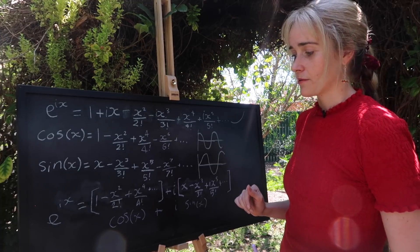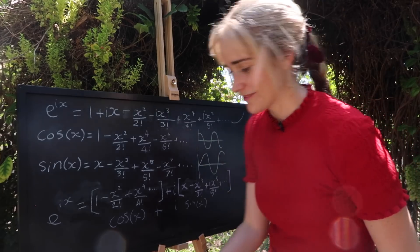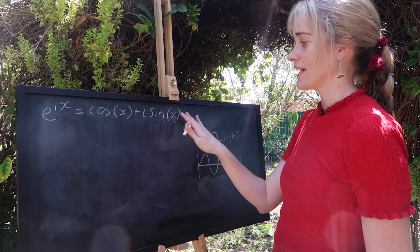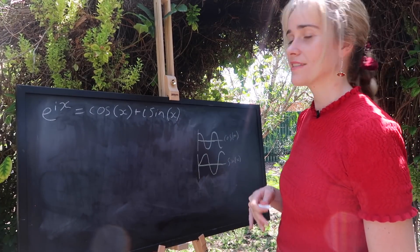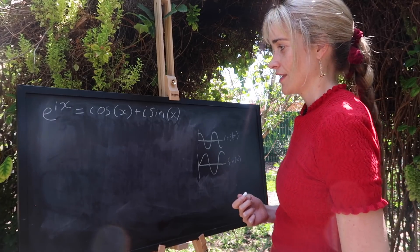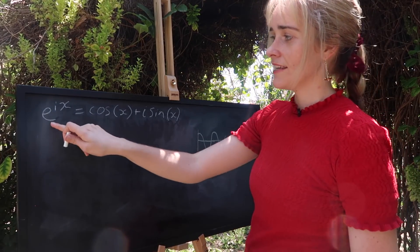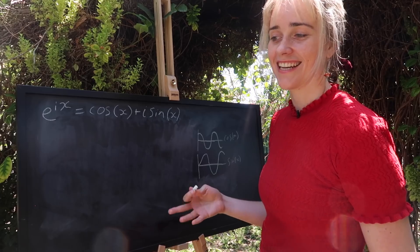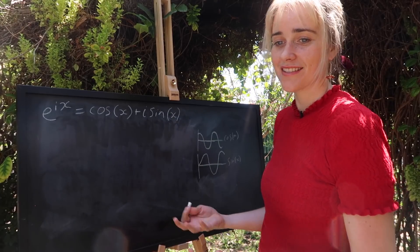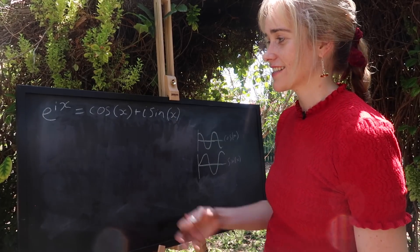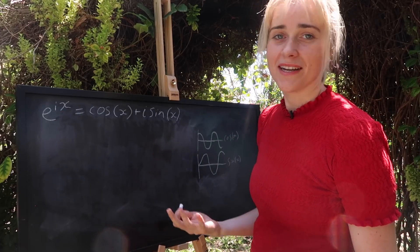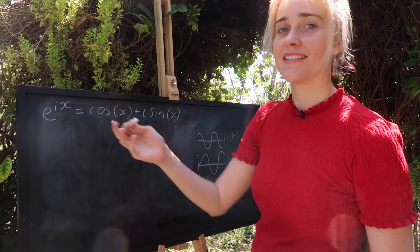Let me rub this off and we'll make some more space for ourselves. Okay, so I've written back up our equation that we've worked towards and let's keep building. So e is a pretty cool function. Like I said, it's an exponential and it's also this nice number in mathematics. i is our imaginary friend and x is some unknown.